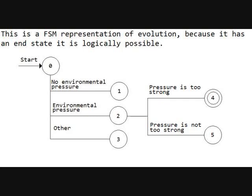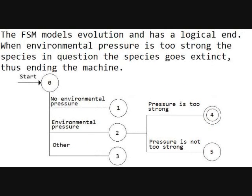This is a finite state machine representation of evolution. Because it has an end state, it is logically possible. You can see there you have state 0, which is the beginning. It presents three choices: no environmental pressure, environmental pressure, or other. In the event of no environmental pressure, you simply go back to the start. In the event of other, you also go back to the start. In the event of environmental pressure, you either go to 'pressure is too strong' or 'pressure is not too strong.' Pressure is too strong leads you to state 4, which is the end state. Pressure is not too strong goes back to the start. The finite state machine models evolution with a logical end: when environmental pressure is too strong, the species in question goes extinct, thus ending the machine.